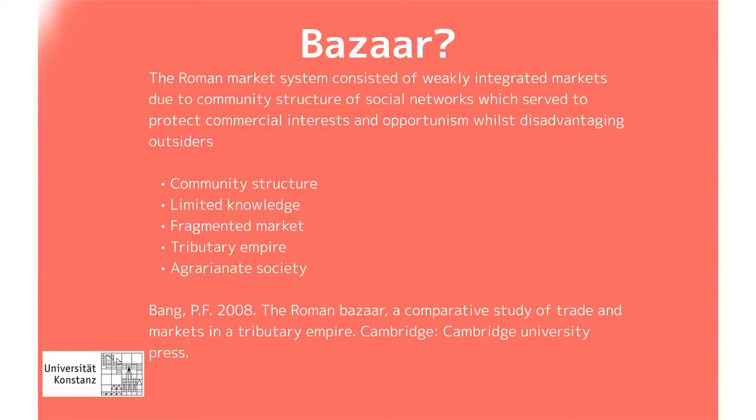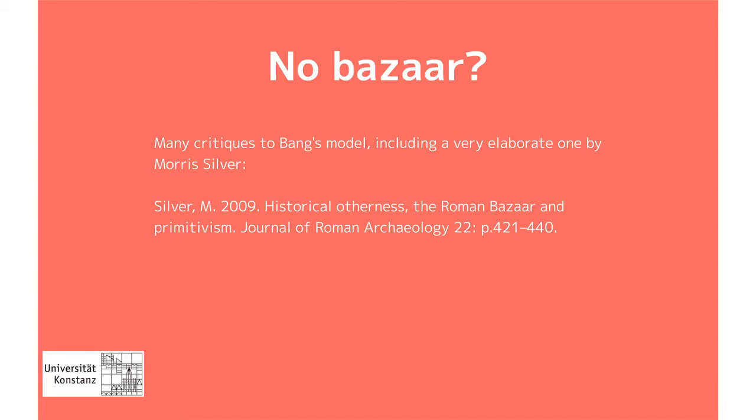There are other aspects of Bang's model — most importantly the tributary empire and agrarian society — that I will not discuss. I'm focusing on one specific aspect that I think shows potential for formalization using concepts that can be compared to aspects of another model. Not everyone agrees with Peter Bang — a lot of people critique his model, most interestingly Morris Silver, in what is a very elaborate, almost attack on Bang's model. When I read this debate, I have the impression that we're throwing different interpretations of the same phenomenon back and forth, backed by anecdotal evidence, and the arguments are not conclusive. The data and arguments are not comparable.